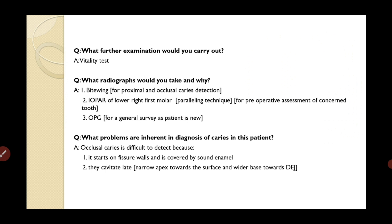The first question is: what further examination would you carry out? In this scenario two teeth are involved — the second molar and the first molar — and they are adjacent. To understand which tooth is causing the sinus, you need to know which is non-vital. Although clinically the first molar is the most likely, you still carry out a vitality test on both teeth to confirm which one is non-vital.